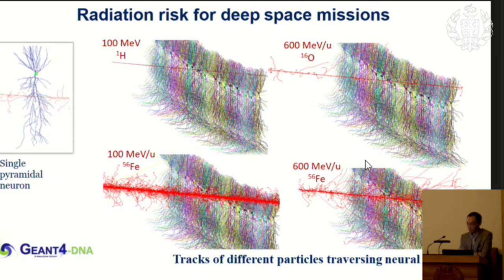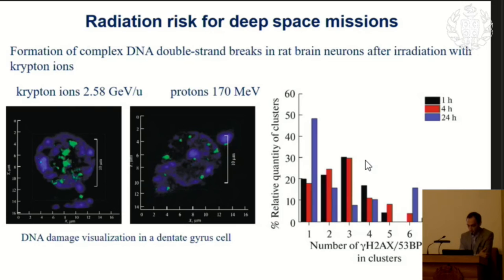Here you can see a sampling with a typical medical proton beam and heavy iron ions with very high energy. You can see at the level of the neural tissue there will be a lot of damage in the cells. Our experiments with extremely high charge particles revealed that there will be a lot of DNA damage, highly structured and clustered. You can see one of the world's unique experiments with relativistic krypton ions. Compared to typical medical proton beams, there will be a lot of very complicated damage, hard to repair.